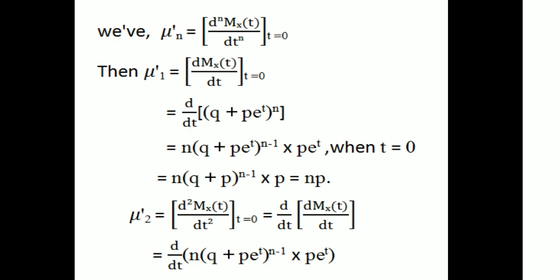Then mu₂' is equal to the second derivative of M_X(t) with respect to t, evaluated at t equal to 0. That is d by dt of the first derivative. The first derivative is n times q plus p e raised to t, all raised to n minus 1, times p e raised to t. We now differentiate this again using the product rule.